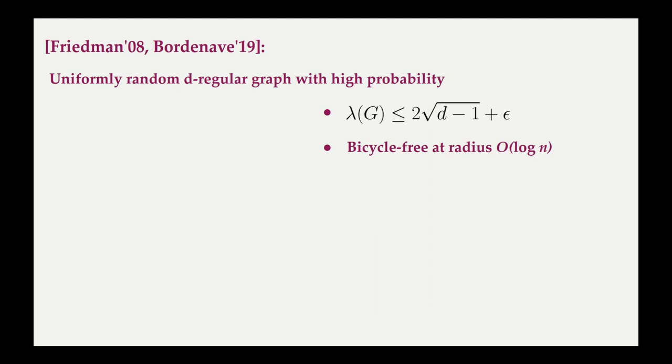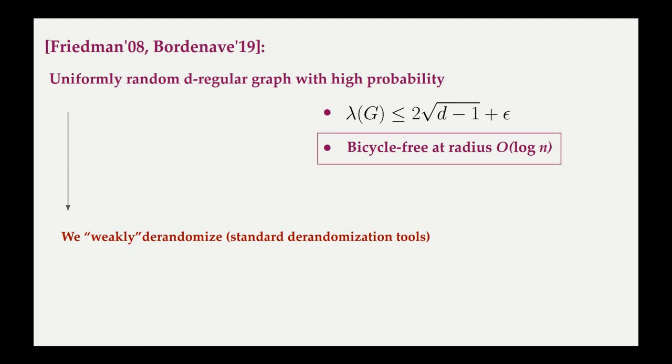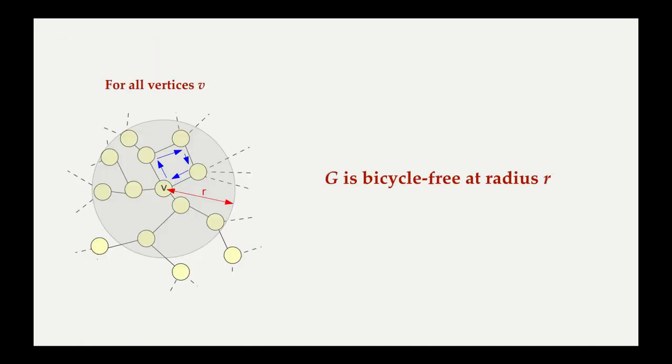Recall the result proved by Friedman and simplified by Bordenave, which says uniformly random d-regular graphs are near-Ramanujan with high probability. Using standard derandomization tools, we weakly derandomize this, meaning we obtain a quasi-polynomial time algorithm that produces a near-Ramanujan graph. Additionally, the produced graph is essentially sparse in small cycles. Namely, it is bicyclefree at radius something like log n. Bicyclefree-ness at radius r means that every radius r vertex neighborhood in G has at most one cycle.